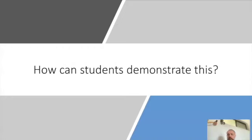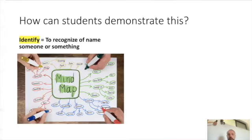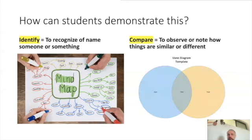So how can students demonstrate this if they don't have to develop a text? Identify means to recognize or name someone or something — a simple way students could demonstrate this, which also builds lifelong learning skills, is developing mind maps. The cognitive skill of compare could be demonstrated through a Venn diagram, where students identify the similarities and differences between different responses to a geographical issue.